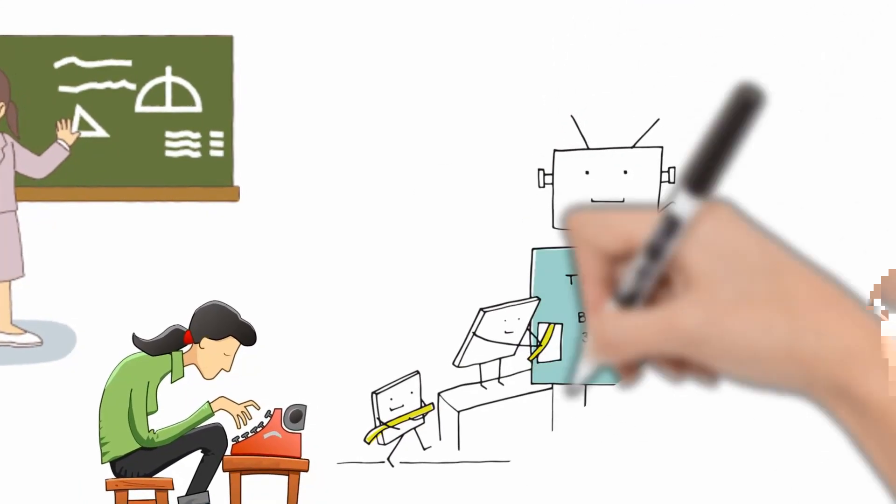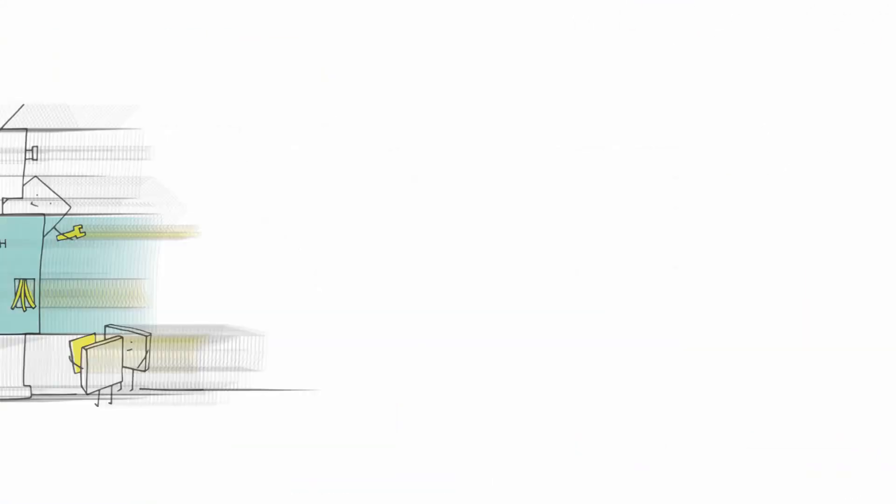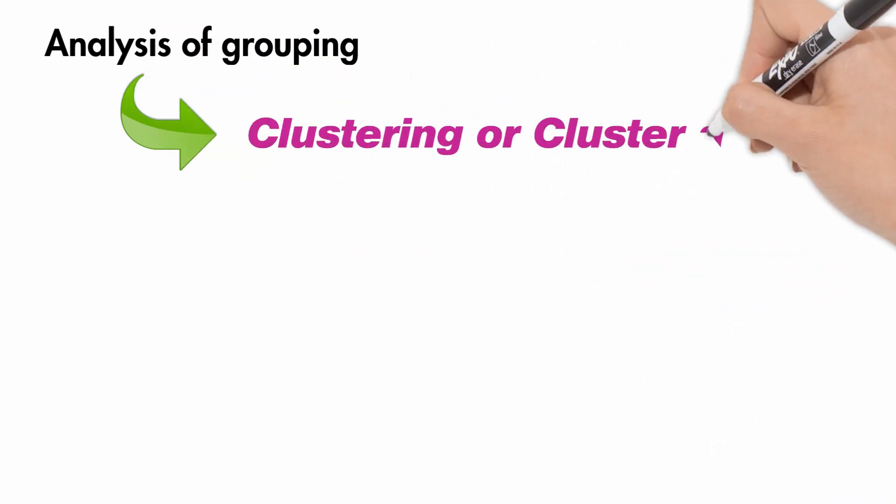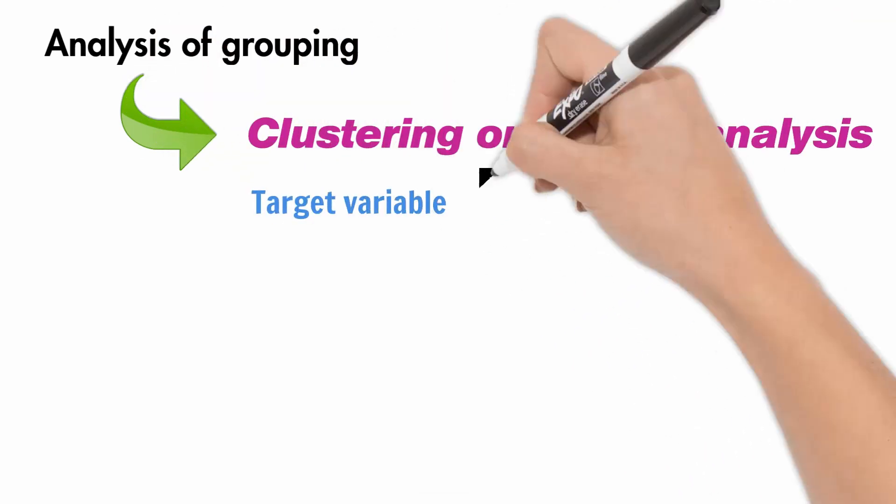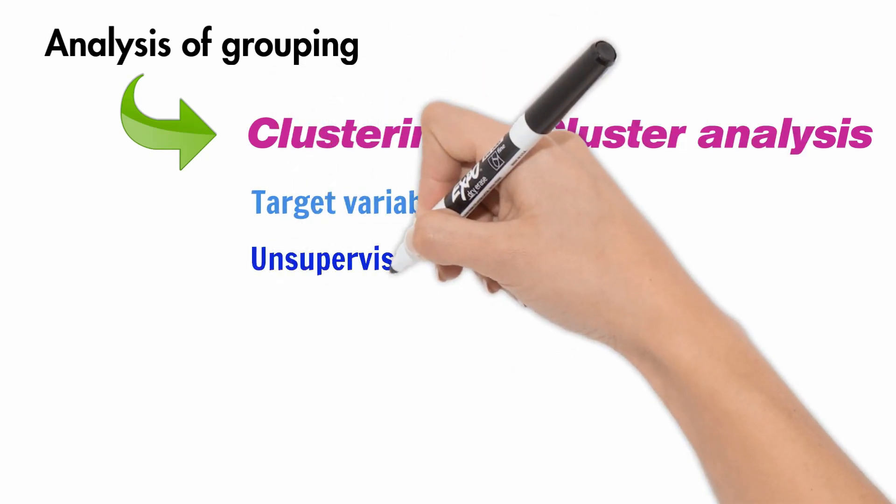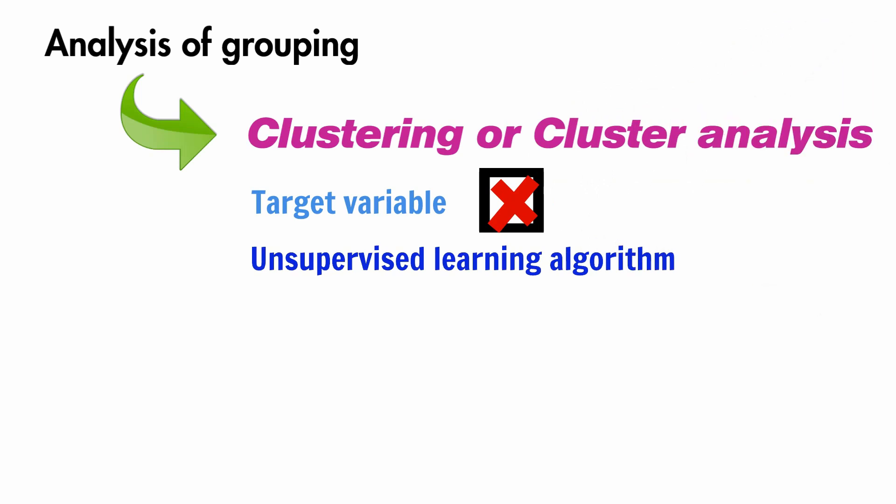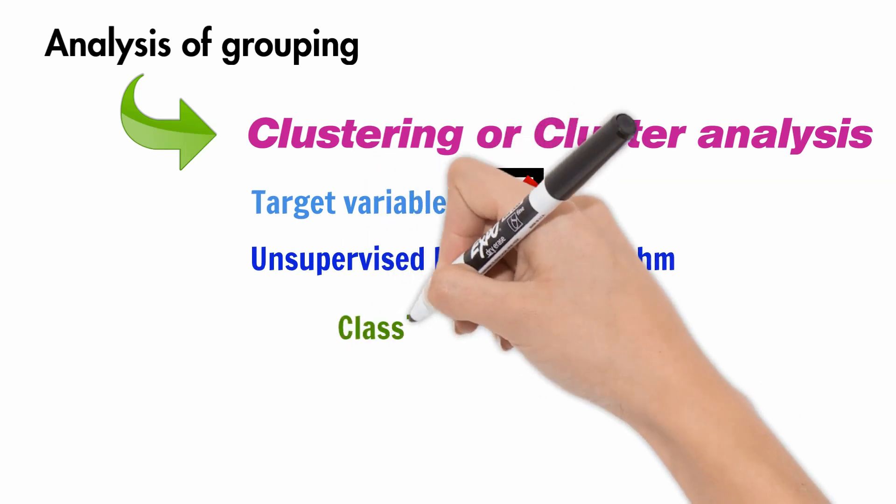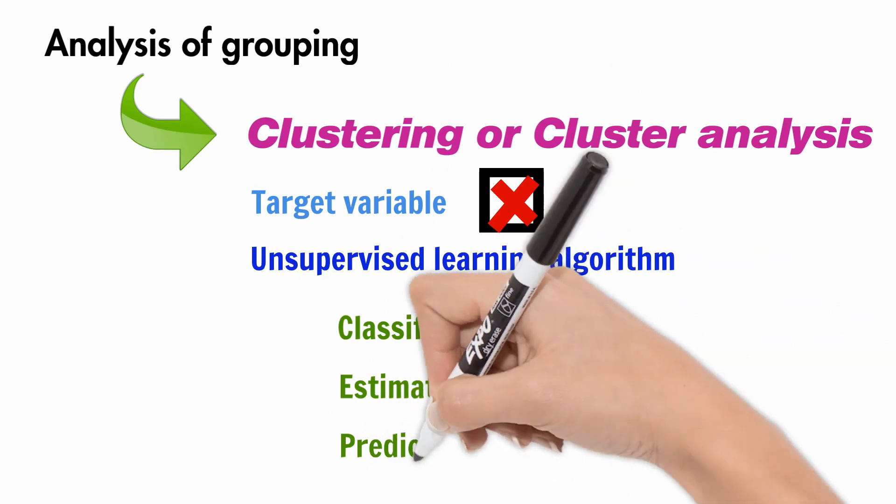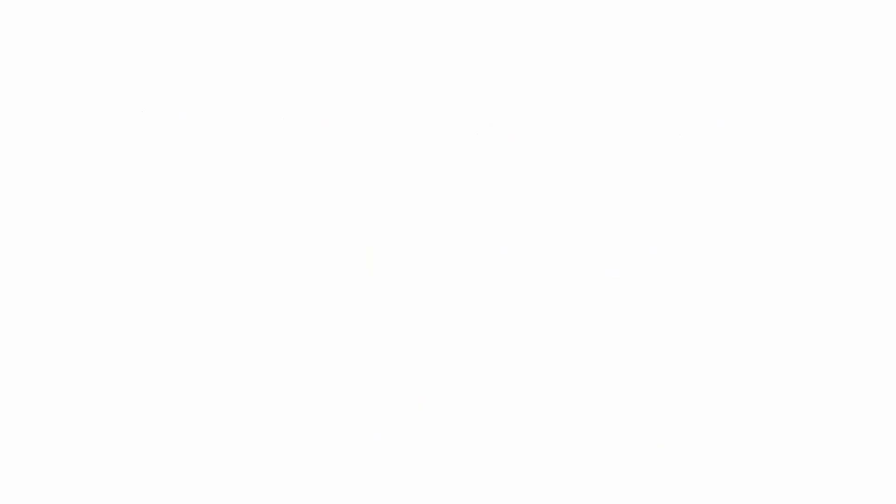But then how do you get a computer or machine to do this? When we teach this analysis of grouping to a machine, we are effectively undertaking clustering or cluster analysis. In this analysis we do not have the target variable or the dependent variable, and hence it is called the unsupervised learning algorithm. In clustering we try to discover structures without providing an explanation. The algorithm does not classify, estimate, or predict anything. It simply groups items into similar clusters.